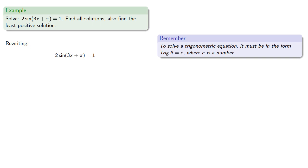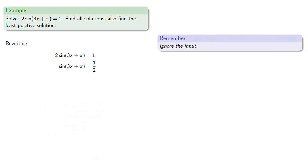So we'll rewrite our equation. Now, it's helpful to ignore the input. So even though we're trying to solve sine of (3x plus pi) equals 1/2, it's really sine of blank equals 1/2.